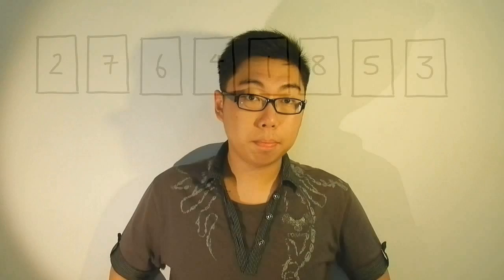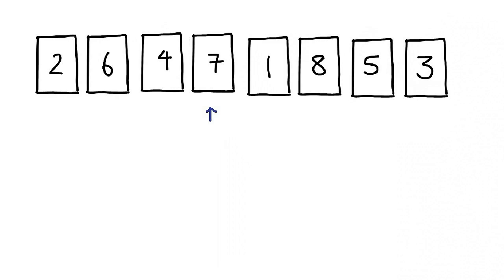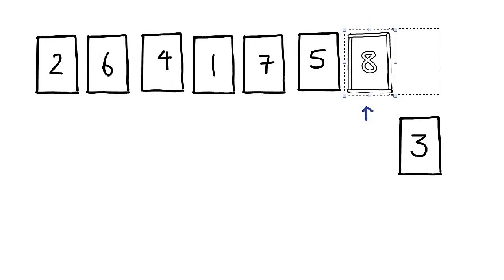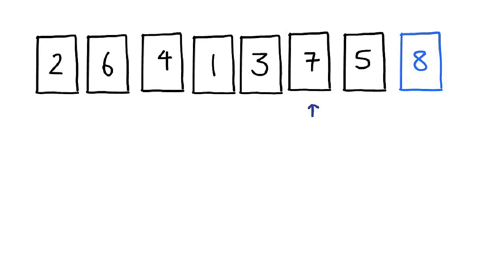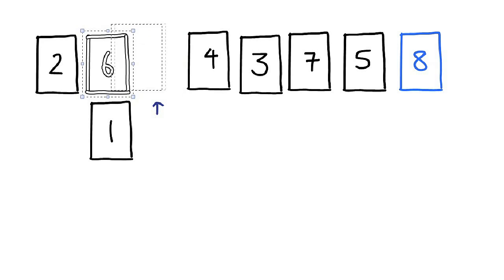We are working on the same unsorted list, and what's going to happen is we're going to move forward first. This should be nothing new to you because this is exactly what Bubble Sort does. Now we've hit the end of the list. Instead of jumping all the way to the left and moving forward again, we're going to move backwards instead. As you can see, we are comparing an element with its neighbor on the left. If it is smaller than its neighbor on the left, a swap will take place. Basically, we're trying to push the smaller numbers to the left.